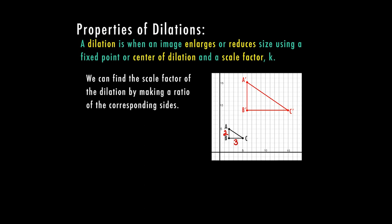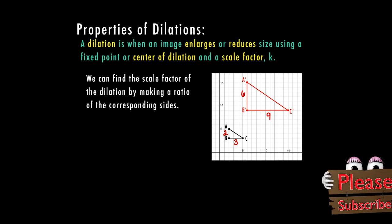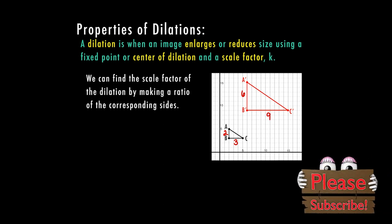If I go here to my image, A prime to B prime is 6 units and B prime to C prime is 9 units. So I'm going to go ahead and make a ratio.